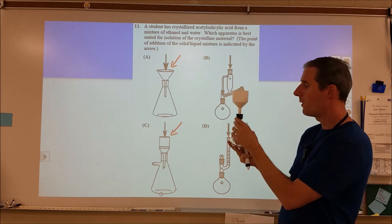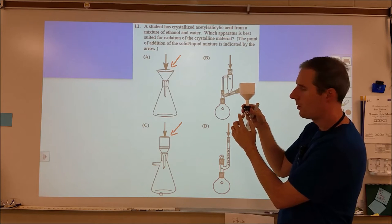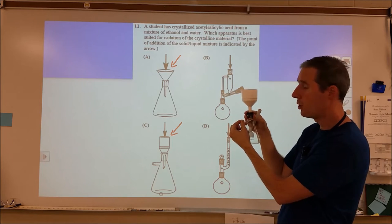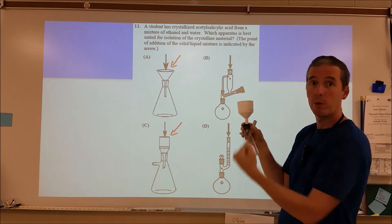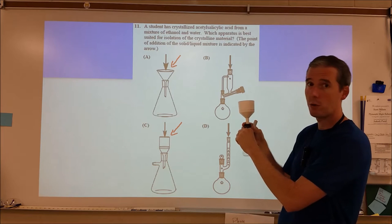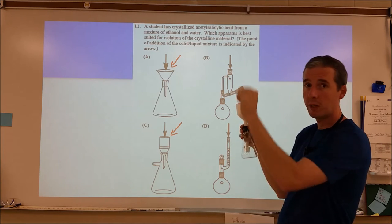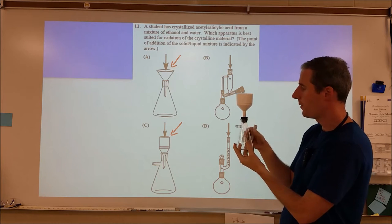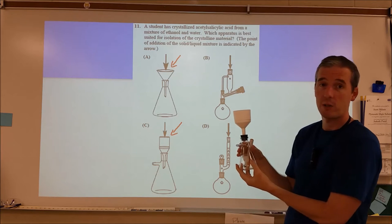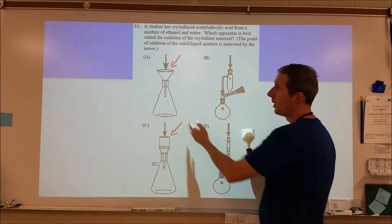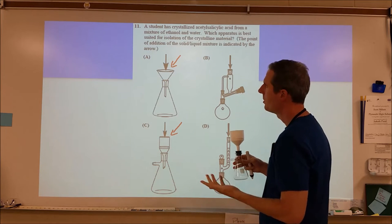The difference between those, if you've never used one, in C, this is an Erlenmeyer flask that has a little arm out of it. And this hooks up to a piece of tubing that hooks up to your sink. And as the water runs down the sink, it pulls air or pushes air out of the way. So it creates a drop in pressure. And as the air molecules go from here through the tube and get pushed out by the water, then you create a pressure difference here than here. And so air ends up pushing the solution through this much faster. So it's called vacuum filtration. It works the same as this, except it's a little better.